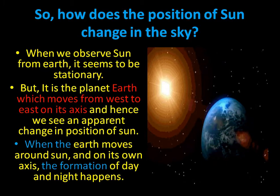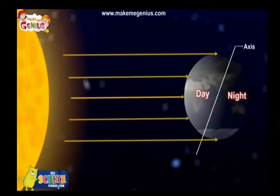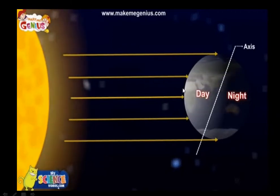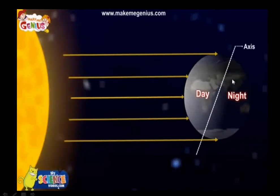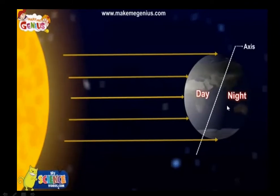So when the earth rotates on its own axis, the formation of day and night happens. This yellow colored body here is the sun and this is the earth. Earth is on its rotation. When light falls on the earth, the side which is facing the sun has got day, and the side which is not facing the sun has got night.